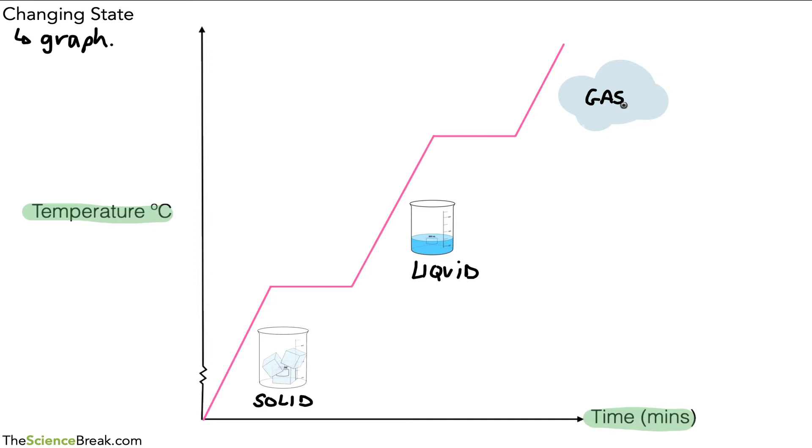Now one thing to remember from this graph is that anywhere where the line is going upwards, where the line is moving up, that's where the substance is getting hotter. The temperature is rising. So that's that point there, up at that point there and down at this point here. So that's where the temperature is getting higher. The substance is getting hotter.